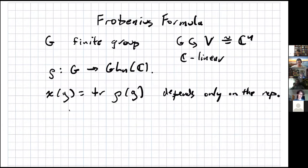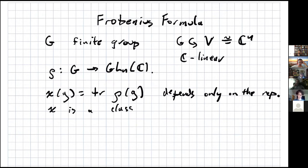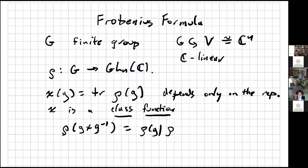When we conjugate a matrix, the trace stays the same, so chi depends only on the representation, not on the choice of basis. It's remarkable, if you haven't seen this before, how much of the overall structure of the representation is captured just by this function chi. Chi is what's called a class function, meaning that chi of g depends only on the conjugacy class of g. If we have rho of g x g-inverse, that is conjugate to rho of x, so the traces of both sides are the same.